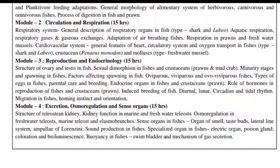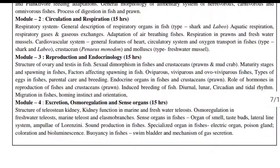Sense organs in fishes include organs of smell, taste buds, lateral line system, ampullae of Lorenzini, and sound production. Specialised organs include electric organs, poison glands, coloration and bioluminescence. Also covered is buoyancy in fishes — swim bladder and mechanism of gas secretion.